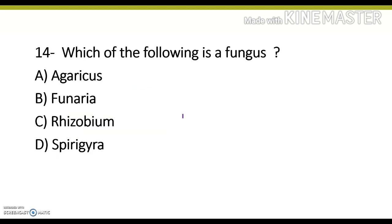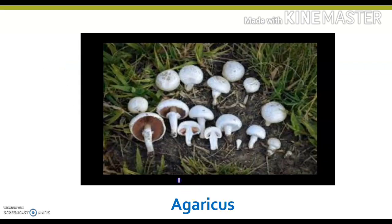Which of the following is a fungus? Agaricus, Funaria, Rhizobium, or Spirogira. Its correct answer is option A, Agaricus. Funaria is moss. Rhizobium is a nitrogen-fixing bacteria. And Spirogira is a green algae. This is the image of Agaricus, commonly known as mushroom. Some mushrooms are edible and some are poisonous.